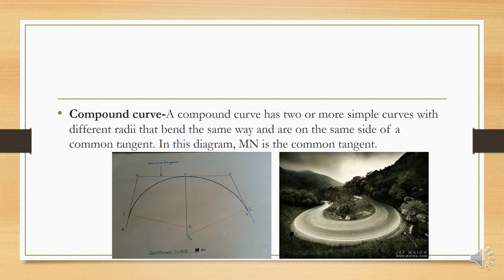Next is compound curve. A compound curve has two or more simple curves with different radii that are on the same side of a common tangent. In the diagram, M and N form the common tangent. This type of curve is used where a sharp turn or U-turn is required.